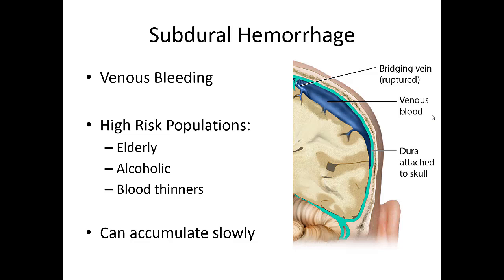The next important head injury is a subdural hemorrhage — a venous type of bleeding. There are many veins inside the cranium, and as people get older or have brain atrophy — especially alcoholics — as the brain shrinks the skull stays the same, giving more room for the brain to rattle around. If older people or alcoholics fall and hit their head, those thin-walled veins can rupture and blood can collect between the brain and skull, which can be devastating if not corrected.